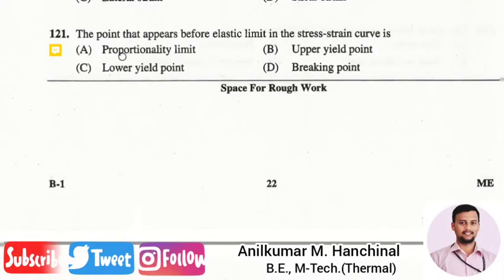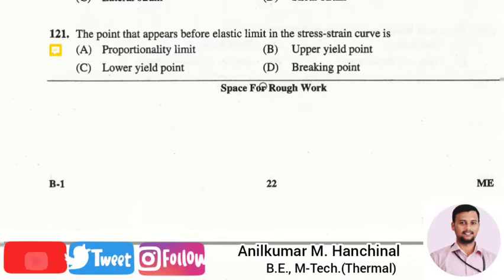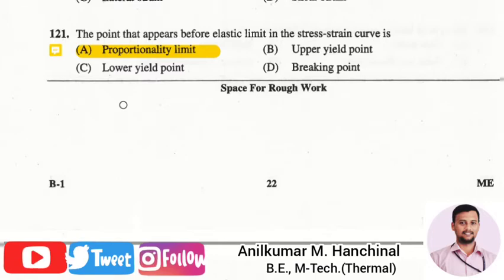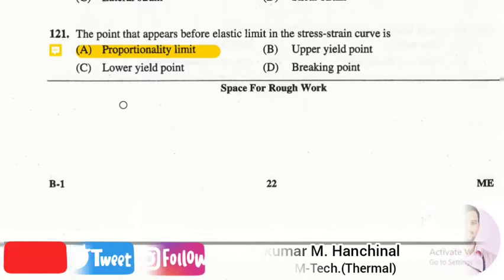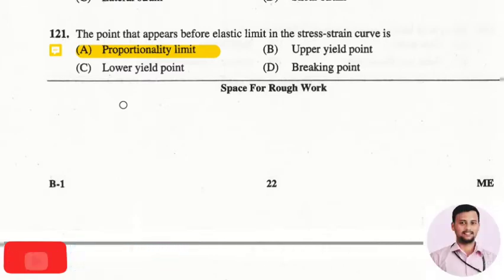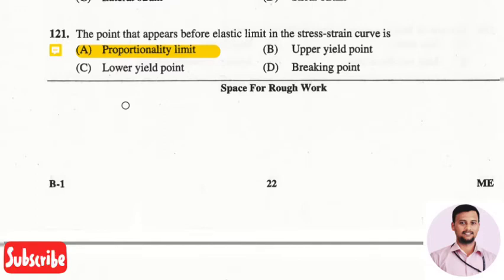The next question is: the point that appears before the elastic limit in the stress-strain curve is? The right answer is option A, that is proportionality limit. When we draw the stress-strain curve, the first point will be the proportionality limit, the next point will be the upper yield point.